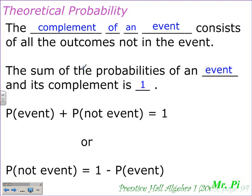Moving on, the complement of an event consists of all outcomes not in the event. The sum of the probabilities of an event and its complement is 1. We can express that as: the probability of an event plus the probability of not the event equals 1, or the probability of not the event equals 1 minus the probability of the event. Working with complements makes things easier sometimes and sometimes it doesn't, so you have to decide.